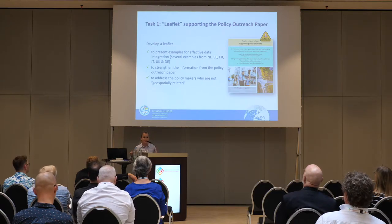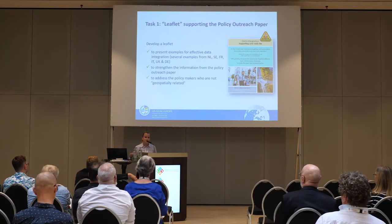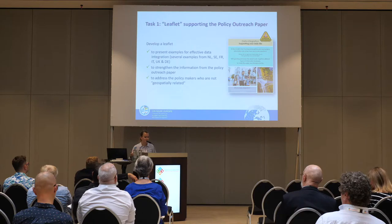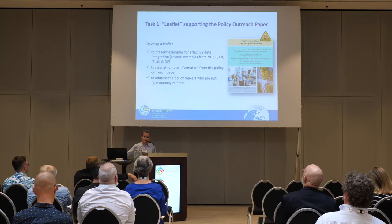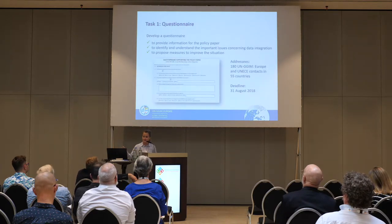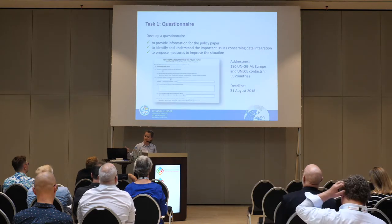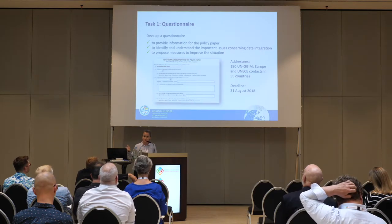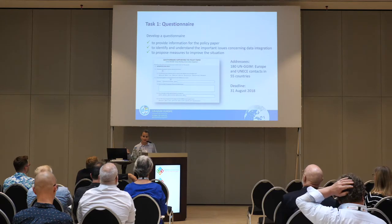As we were writing the policy paper — currently a draft — we were writing some recommendations and realized we didn't know enough about issues and problems within the countries. So we did a questionnaire. The deadline was end of August, and we sent it out to 180 UNGGM members and UN ECE members to gain information about the problems in countries and how to improve the situation.